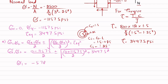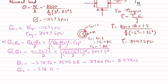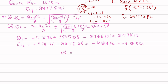This gives σ1,2 = -578.75 ± 3545.08. Therefore, σ1 = -578.75 + 3545.08 = 2966 PSI ≈ 2.97 ksi, and σ2 = -578.75 - 3545.08 = -4124 PSI ≈ -4.12 ksi. These are the principal stresses.